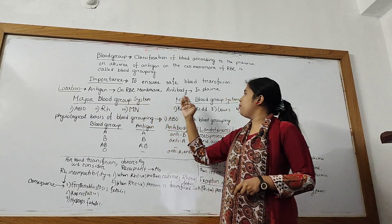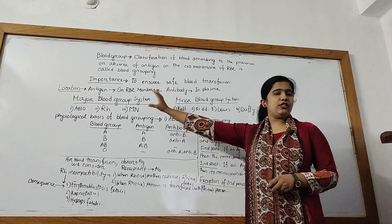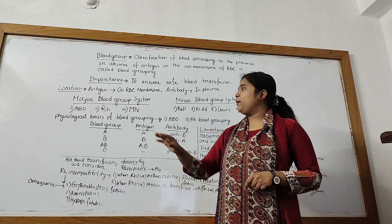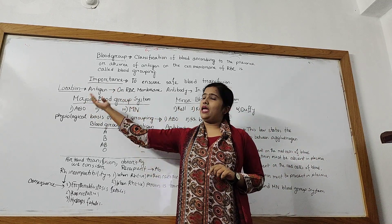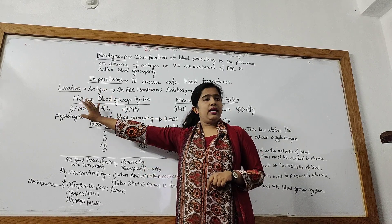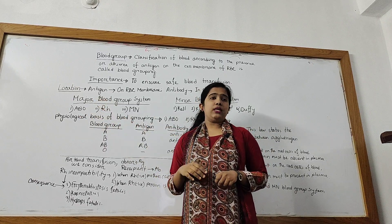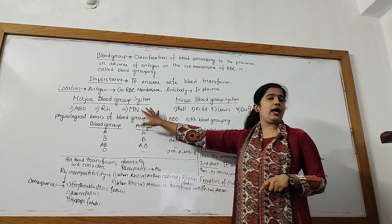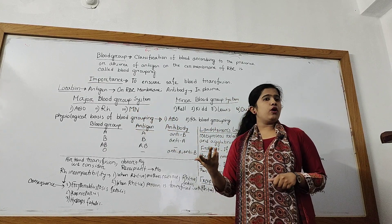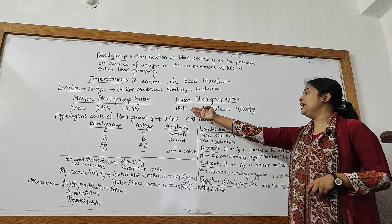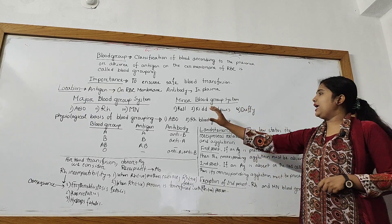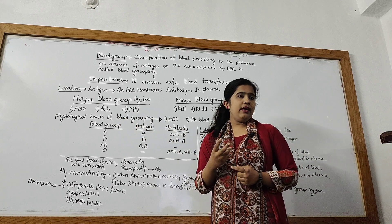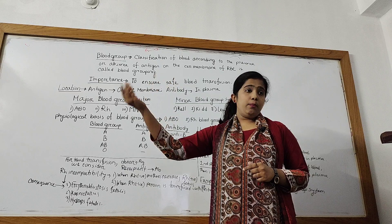We can classify blood groups into major blood group system and minor blood group system. The major blood group system includes the ABO blood group system, the RH blood group system, and the MN blood group system. In ABO, classification is according to the presence of A antigen, B antigen, O antigen, or both A and B antigen.